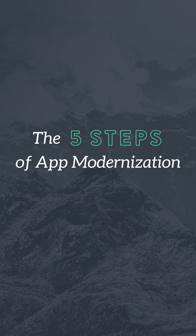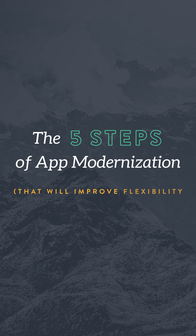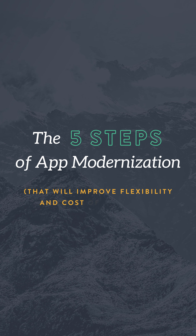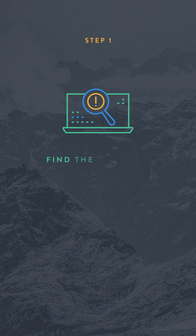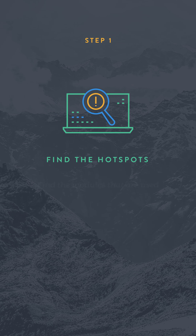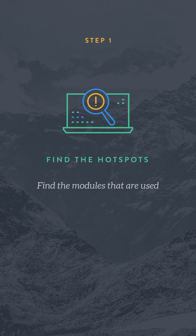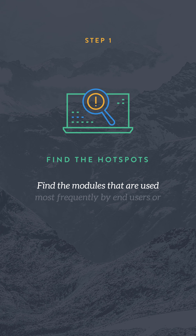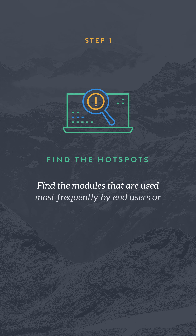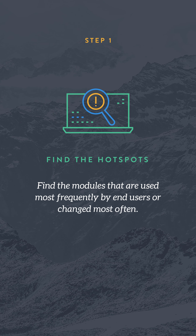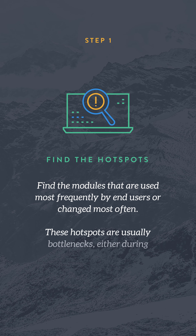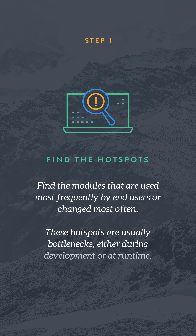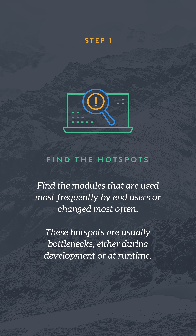Five steps of app modernization that will improve flexibility and cost of ownership. Step one: find the hotspots — find the modules that are used most frequently by end users or changed most often. These hotspots are usually bottlenecks either during development or runtime.